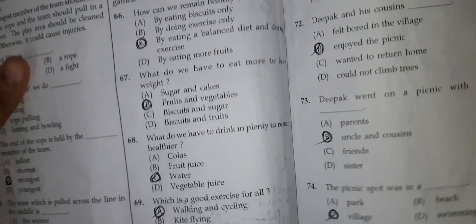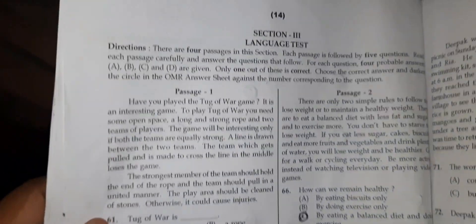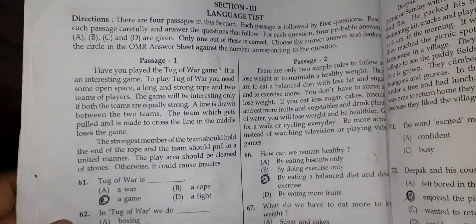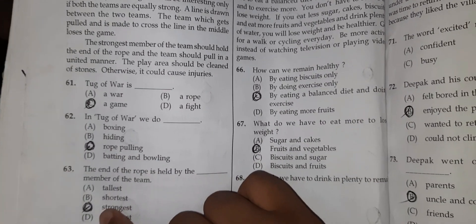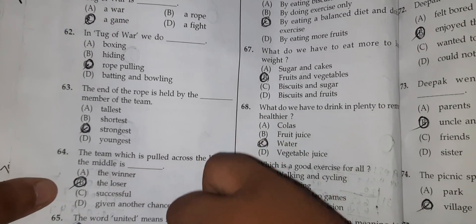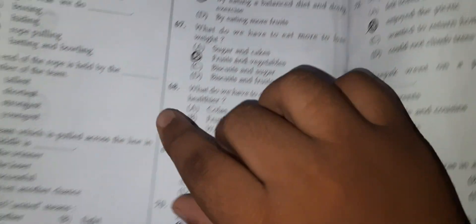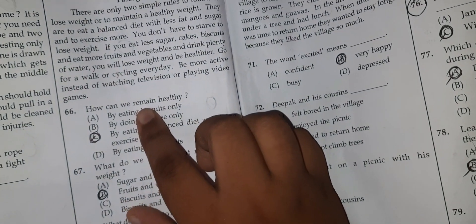60th option A. 61st option C. 62nd option C. 63rd option C. 64th option B. 65th option A. 66th option C.